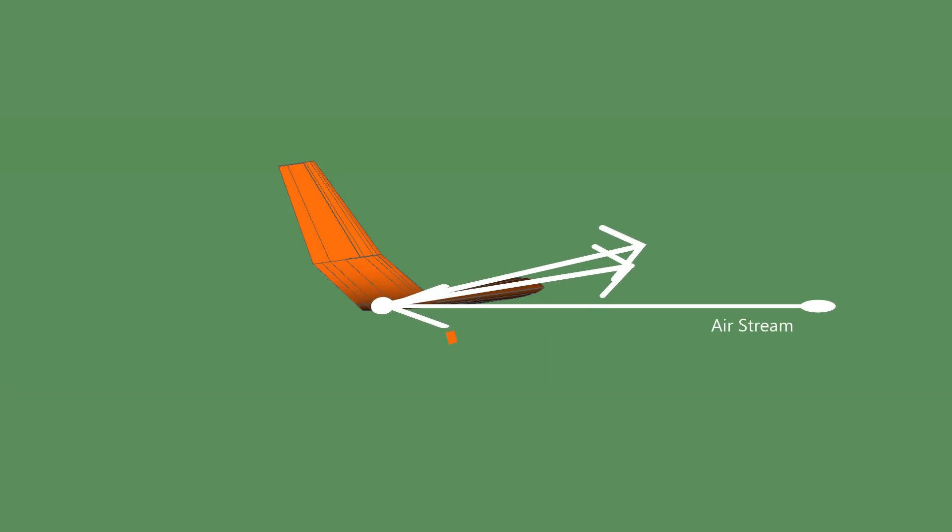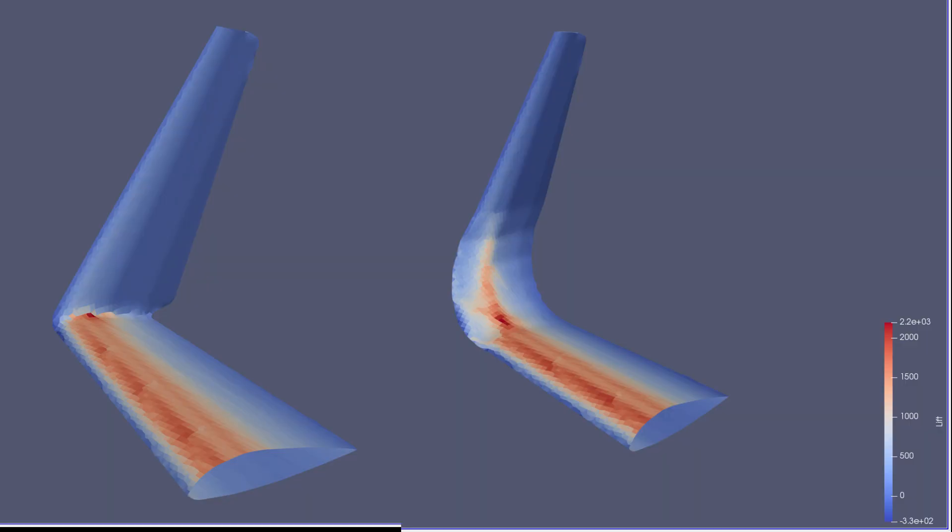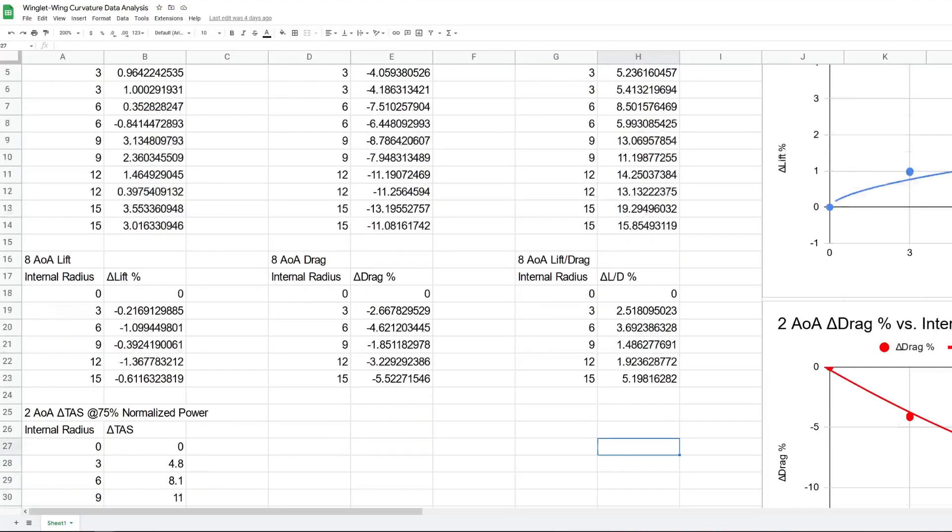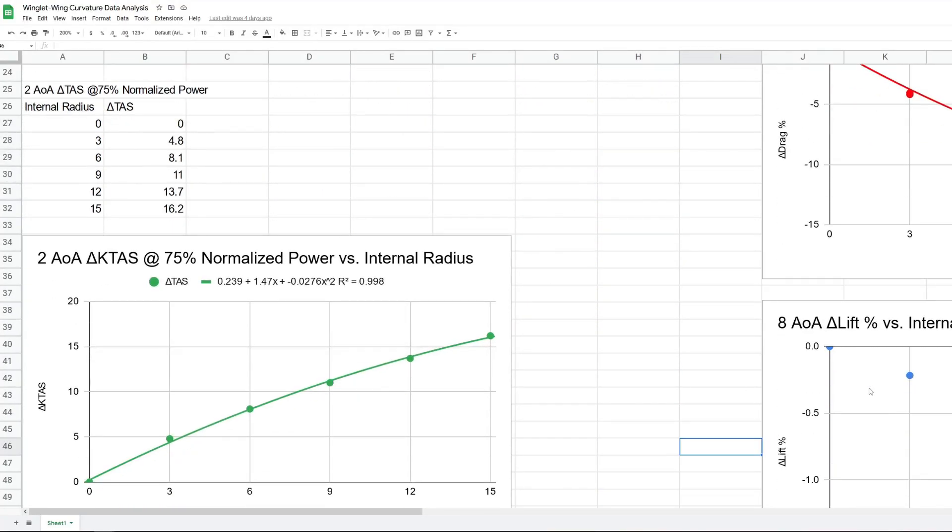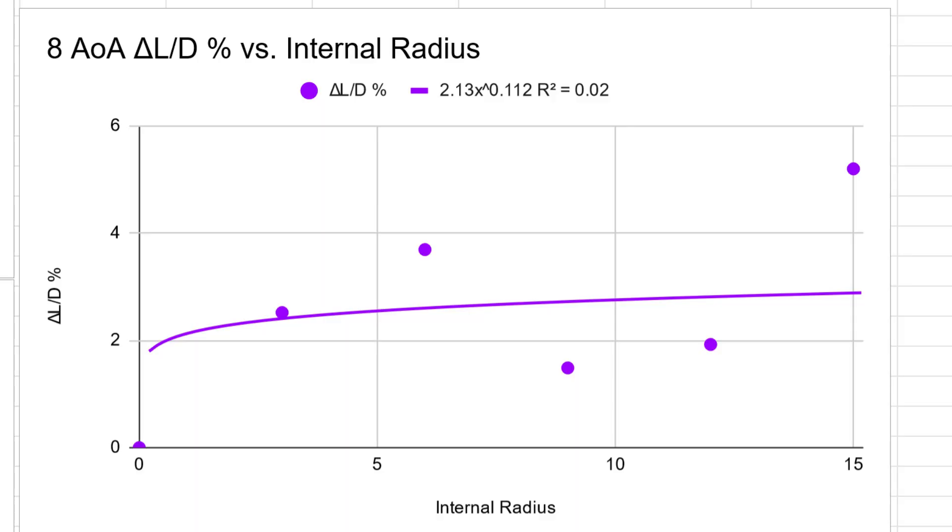After seeing this, I reduced the angle of attack to about 8 degrees, kept with the speed of around 90 miles per hour, and went back to the more granular resolution of about 1 inch. These results were also recorded. With the numerous data points now in a spreadsheet, I was able to generate graphs. Putting the internal radius of the winglet-wing curvature on the horizontal axis and the change of the parameter I was looking to measure on the vertical axis, we had viewable results.